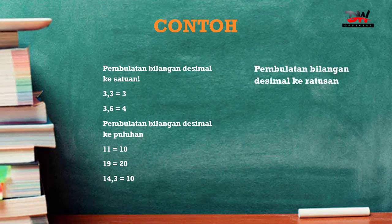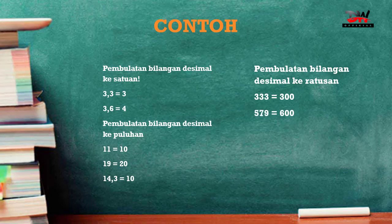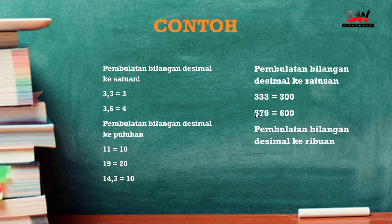Pembulatan bilangan desimal ke ratusan: jika kita membulatkan ke ratusan, maka yang perlu kita perhatikan adalah puluhannya. Jika puluhannya di angka 3, tidak lebih dari 5, maka dibulatkan menjadi 300. Soal selanjutnya 579 jika dibulatkan menjadi 600 karena puluhannya lebih dari 5, maka ratusannya bertambah 1. Pembulatan ke ribuan: yang diperhatikan adalah ratusannya. Jika ratusan tidak lebih dari 5 maka tetap; jika lebih dari 5 maka bertambah 1.